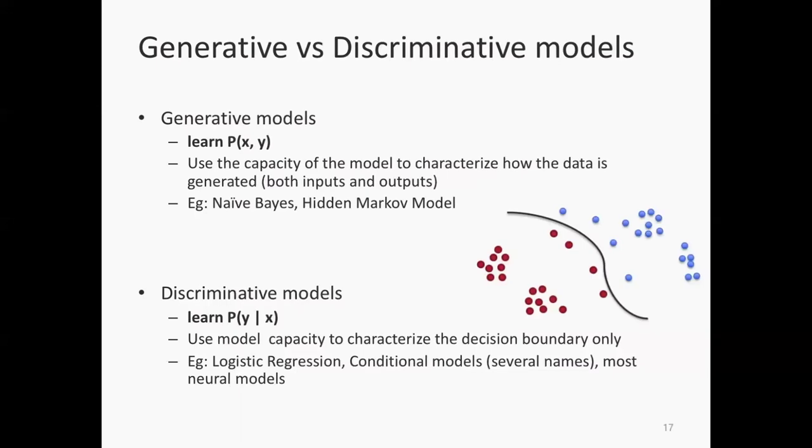Imagine you have this classification task where there are red circles and blue circles. Let's say this is the natural distribution of the data. There's some cluster of red things here, another cluster here, and a line of red things here. There's a cluster of blue here, some blue here, and a line of blue things here.